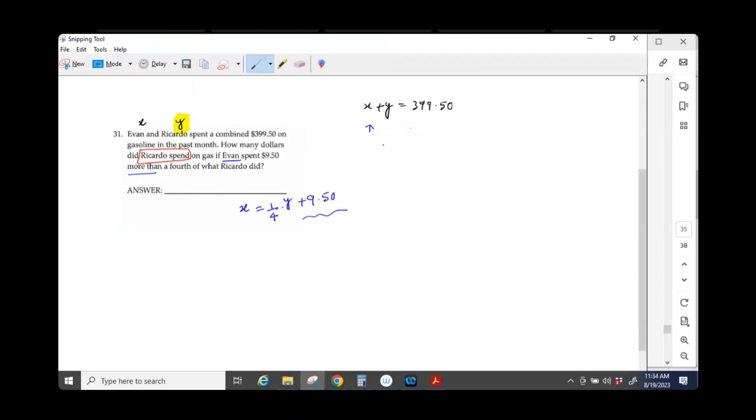So, what is it? One-fourth Y plus $9.50 plus Y is equals to how much? $379.50. So, subtract $9.50. So, what do you get? $390.